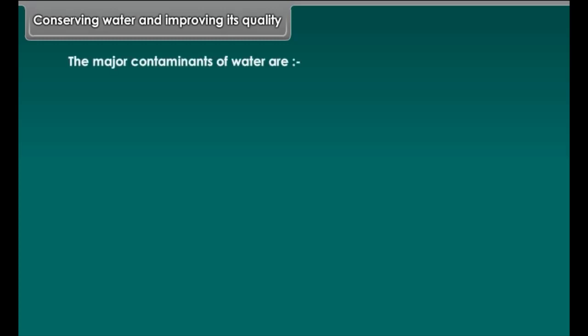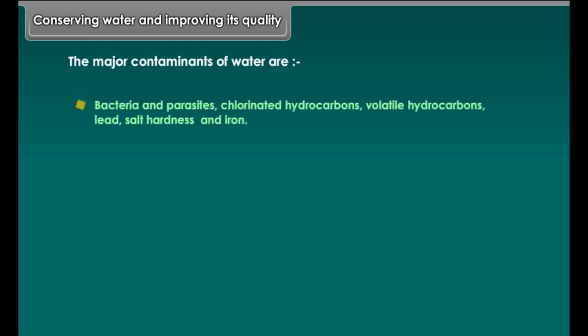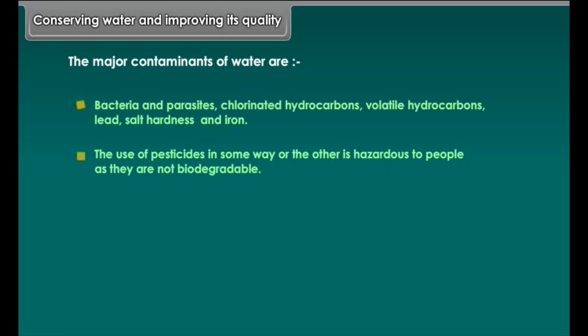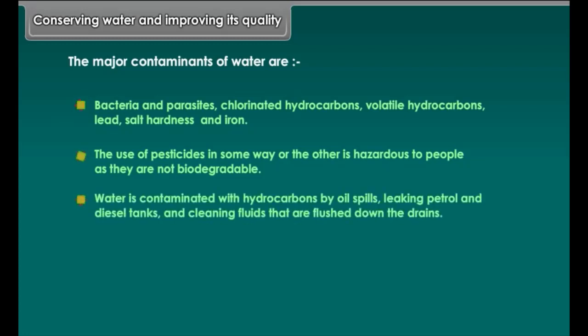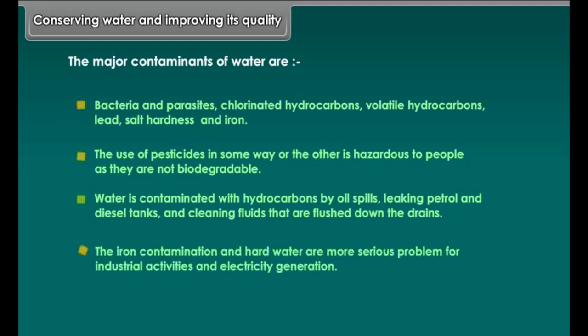Conserving water and improving its quality. The major contaminants of water are bacteria and parasites, chlorinated hydrocarbons, volatile hydrocarbons, lead, salt hardness, and iron. The use of pesticides is hazardous as they are not biodegradable. Water is contaminated with hydrocarbons by oil spills, leaking petrol and diesel tanks, and cleaning fluids flushed down drains. Iron contamination and hard water are more serious problems for industrial activities and electricity generation.